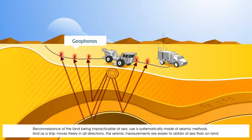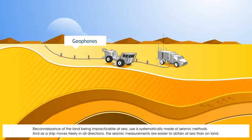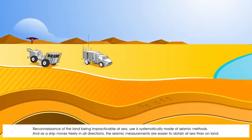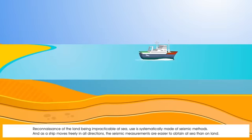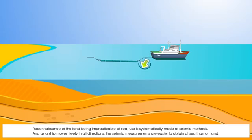Reconnaissance of the land being impracticable at sea, use is systematically made of seismic methods. And as a ship moves freely in all directions, the seismic measurements are easier to obtain at sea than on land.